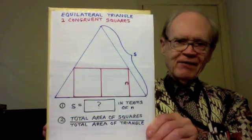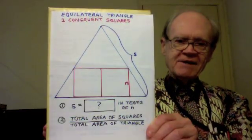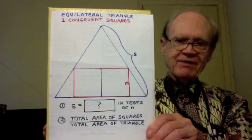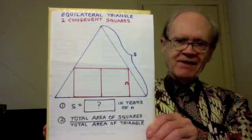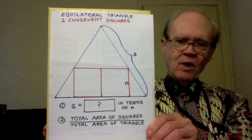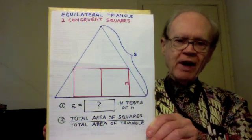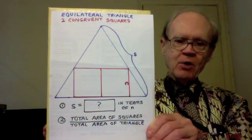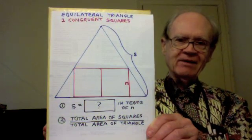I have two questions. The first question: s equals what in terms of n? And the second question: what is the ratio of the total area of the squares to the total area of the triangle?